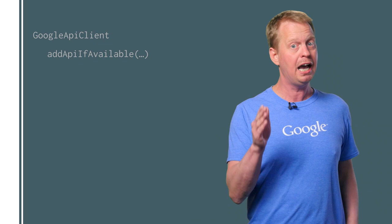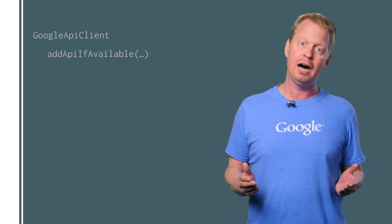This release also has enhancements to the common package, where Google API client now allows you to add optional APIs through addApiIfAvailable. So if you previously had to have multiple connections flow for the phone and the wearable, for example, you can now use this feature to simplify your code.